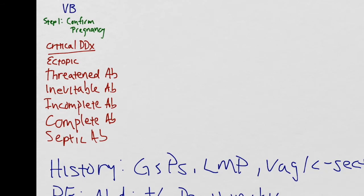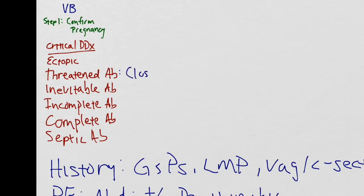Now that we have all the information from history, physical, and workup, we can work through each differential. An ectopic pregnancy is the most critical diagnosis to evaluate for. If the patient has a positive pregnancy test, positive peritonitis on exam, and a FAST exam that reveals free fluid, this patient has an ectopic until proven otherwise — so call OB.